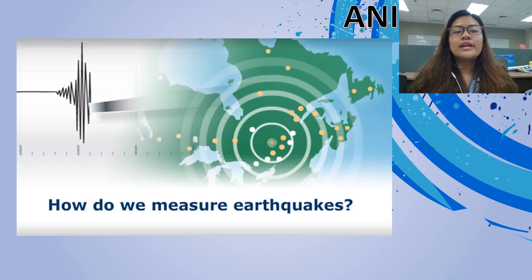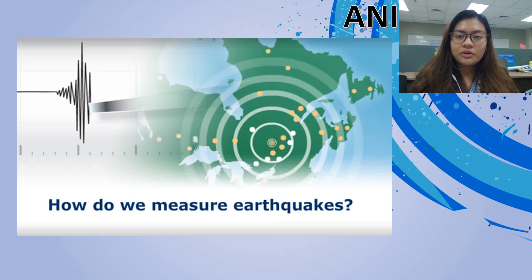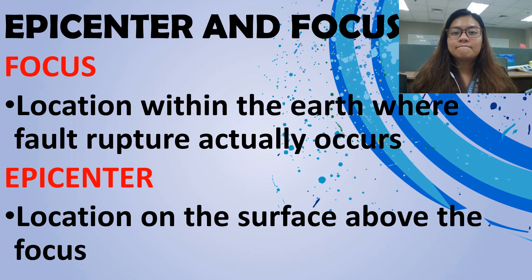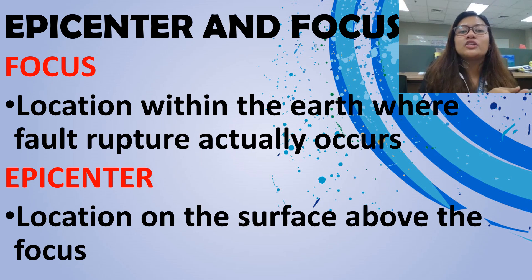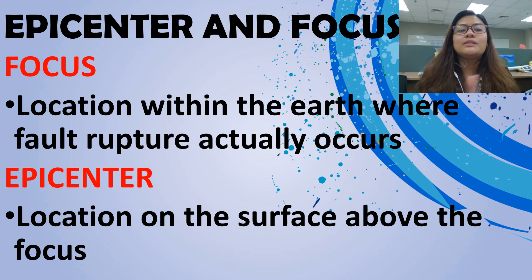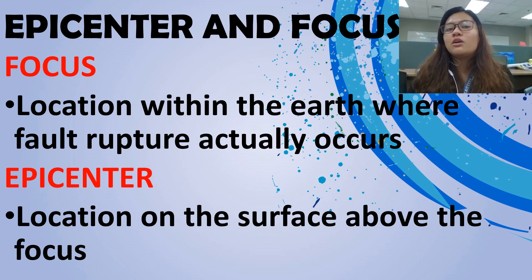We have some animation on how we measure earthquakes. I hope you learned a lot about epicenter and focus and the difference between magnitude and intensity. Focus is the location within the Earth where fault rupture actually occurs. Epicenter is the location on the Earth's surface above the focus, and where we usually measure the magnitude or intensity of the earthquake.